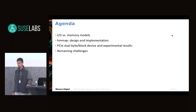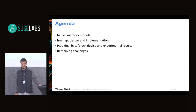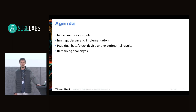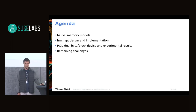Here is what we'll talk about today. First we'll discuss the difference between I/O and memory models of access. We'll look at HMMap and its design and implementation. We'll discuss a prototype device with dual byte and block access and show some experimental results. And I want to spend some time at the end discussing remaining challenges we're hoping to tackle in the future.